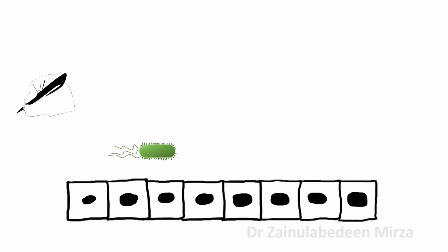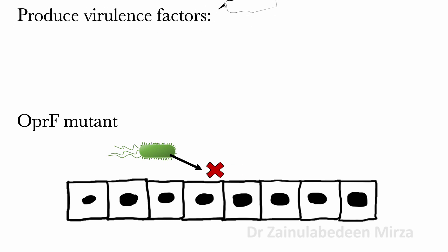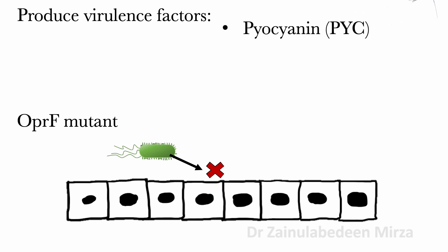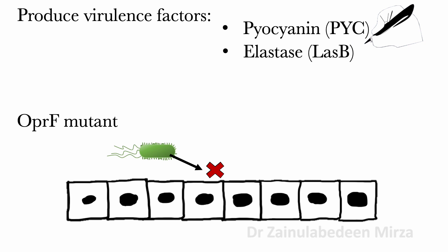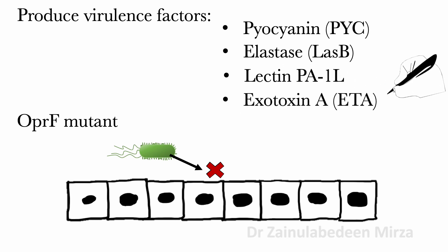OPRF mutants have a reduced ability to attach to cells and to produce various virulence factors such as pyocyanin, elastase, lectin, BA1L, and exotoxin A.